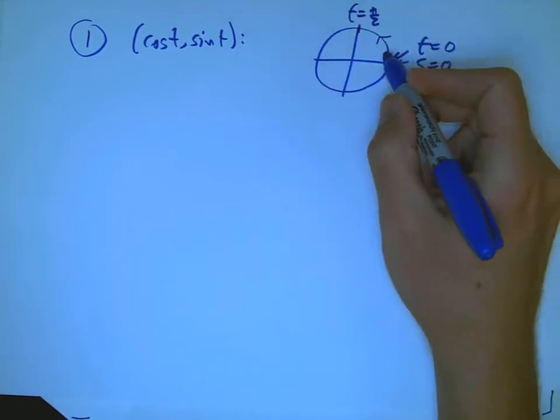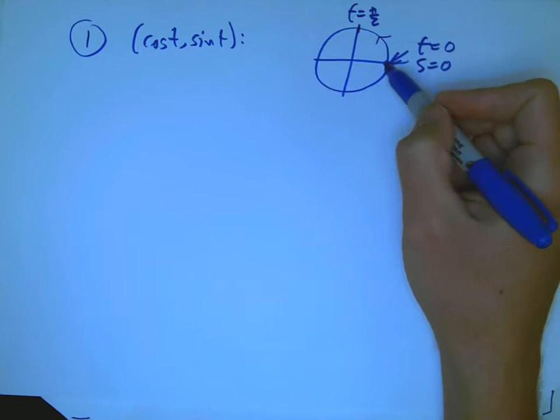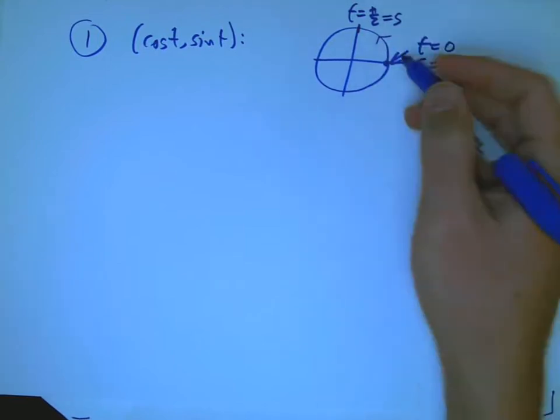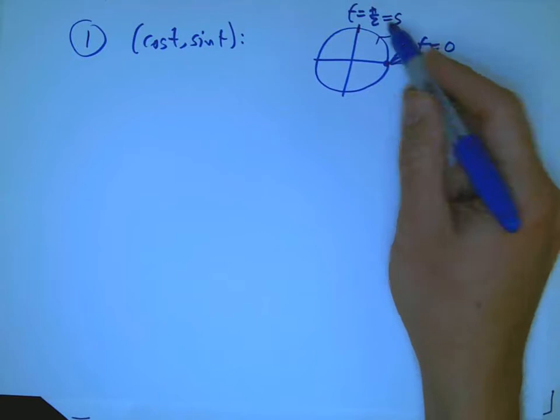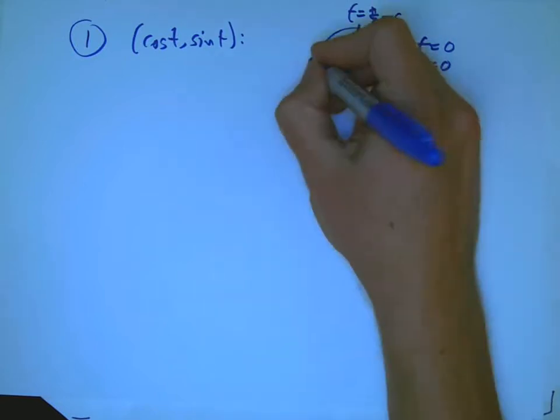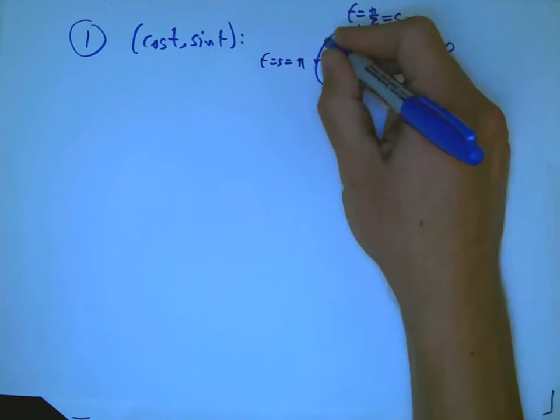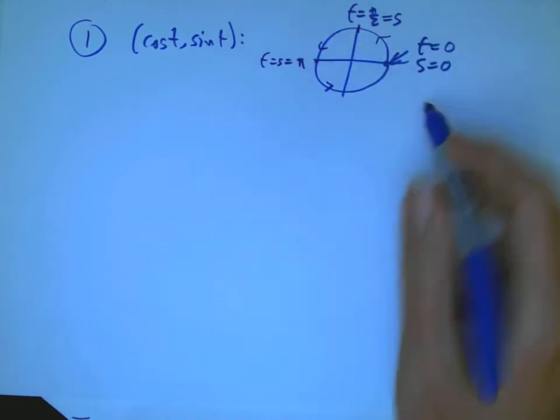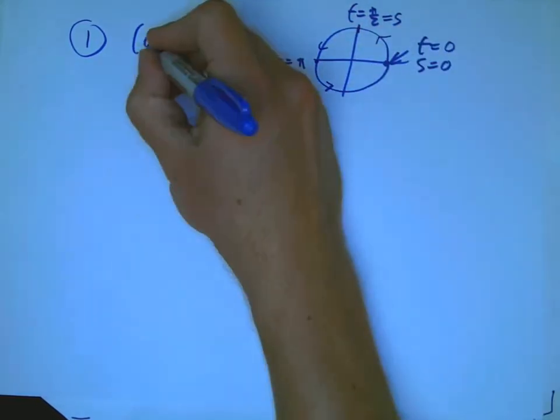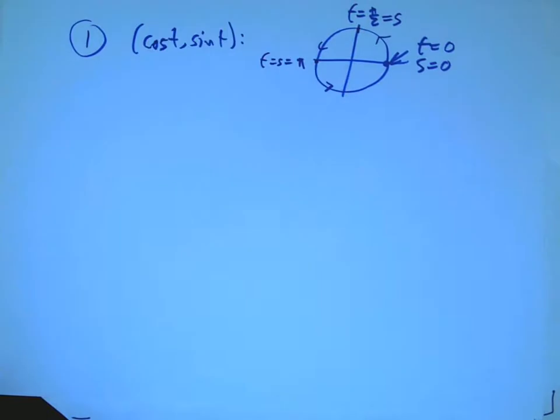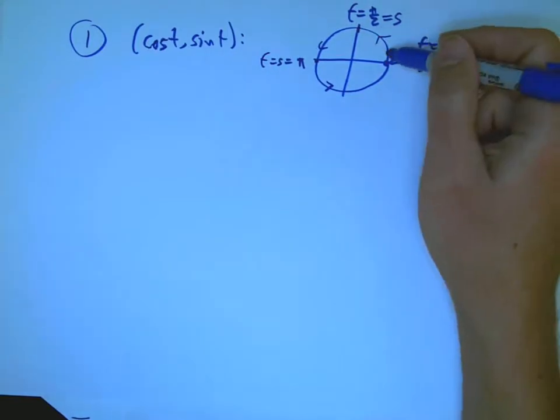And then as you go around the curve, if this is, you know, t equals pi over two, well, you've gone pi over two units at unit speed, and so s is pi over two as well. This is back to just sort of s equals r theta for a circle. So here, t equals s equals pi. As you go around, you're exactly just keeping track of your progress by measuring the arc length.